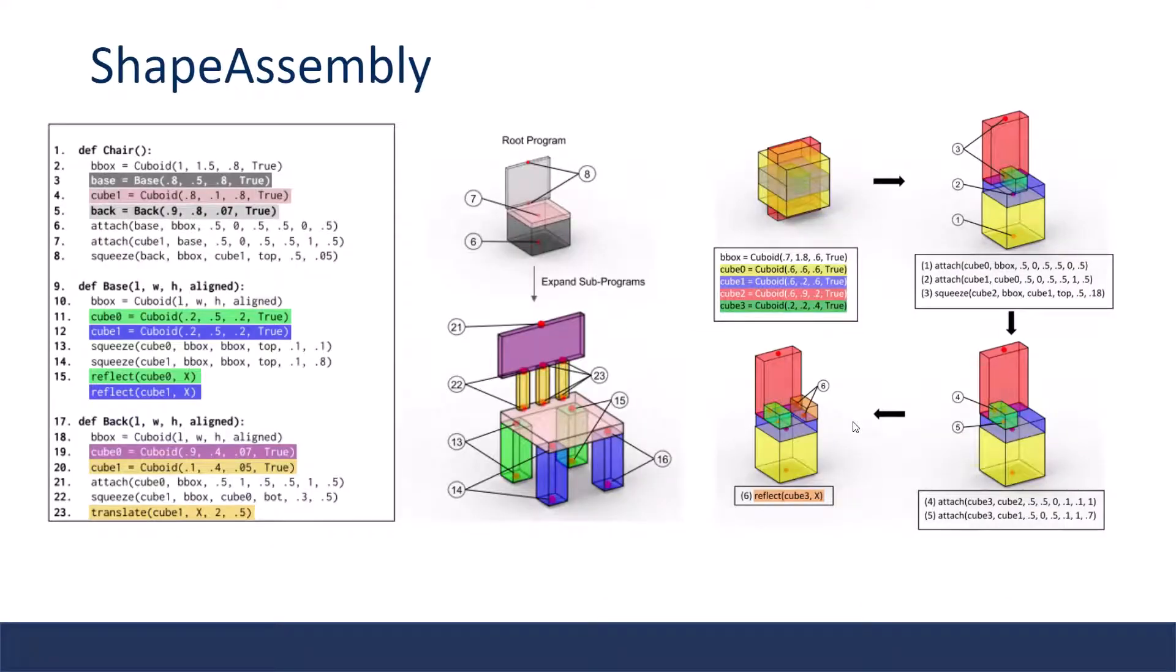This is an example of the Shape Assembly program and the shape that it generates. Parts are colored according to the lines of the program which created them, and the attachment points are numbered accordingly. It also shows the hierarchy. The light gray back part is expanded to the purple back surface and the gold legs. Red figure illustrates how the Shape Assembly interpreter constructs shapes by executing program commands. Cuboids are instantiated at the origin and are moved through attachment commands. The language does not include any operations for explicit positioning or orienting cuboids. All of this is accomplished via attachment operations.